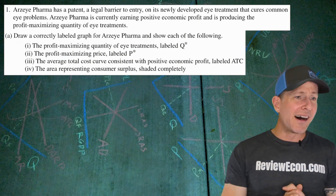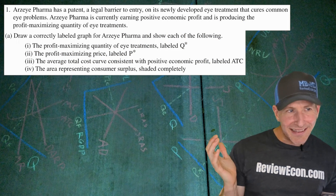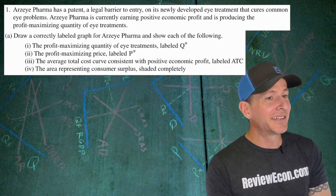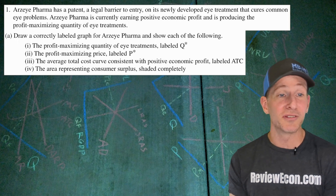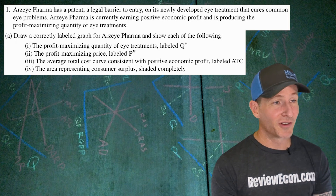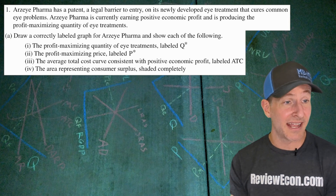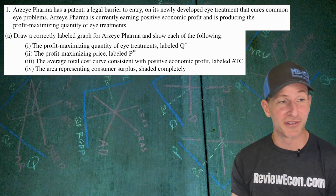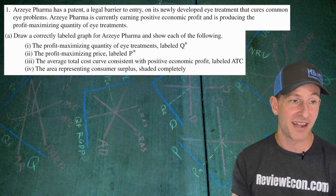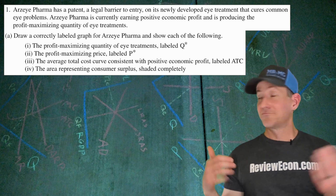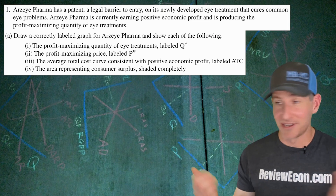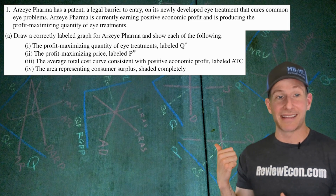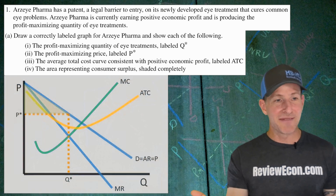First of all, we've got Arzea Pharma, which has a patent — a legal barrier to entry — on its newly developed eye treatment that cures common eye problems. Arzea Pharma is currently earning positive economic profit and is producing the profit-maximizing quantity of eye treatments. We're going to draw a monopoly graph and label it as the question tells us. There's my answer for that.